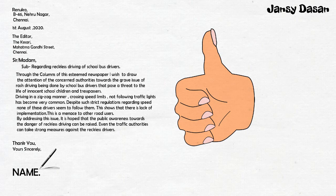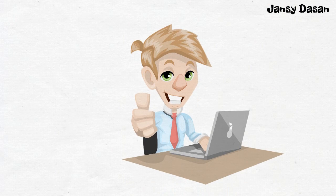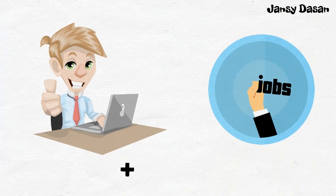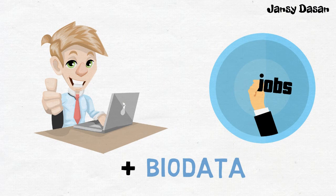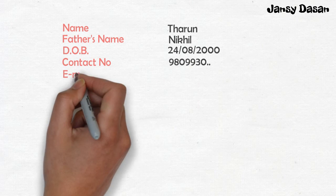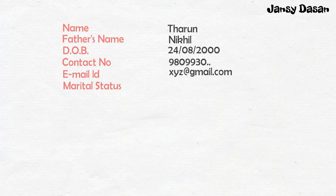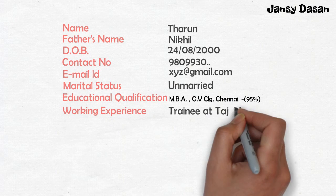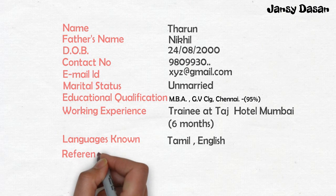Along with other formal letters, you also have covering letters for a job or in response to an advertisement. You have to follow the exact same format used for a formal letter. The only difference is that along with the covering letter, you have to prepare your bio data, resume, or CV — CV stands for curriculum vitae — according to the available job opportunity. A CV includes: name, father's name, date of birth, contact number, email ID, marital status, educational qualification, working experience, languages known, and references, if any.